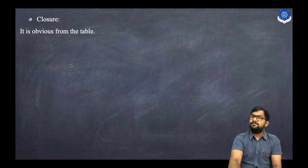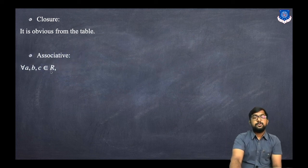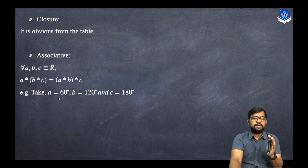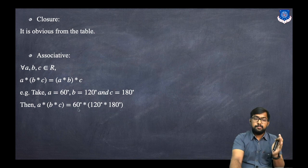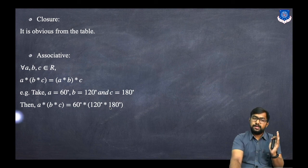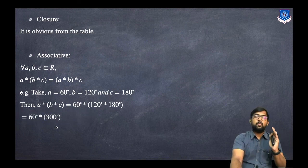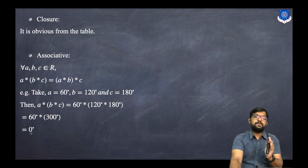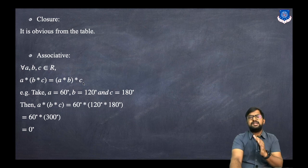From the table, every result belongs to R, so the closure property holds. For associativity, pick a = 60°, b = 120°, c = 180°. Left side: 60° star (120° star 180°) = 60° star 300° = 0°. Right side: (60° star 120°) star 180° = 180° star 180° = 0°. Both sides are equal, so star is associative.